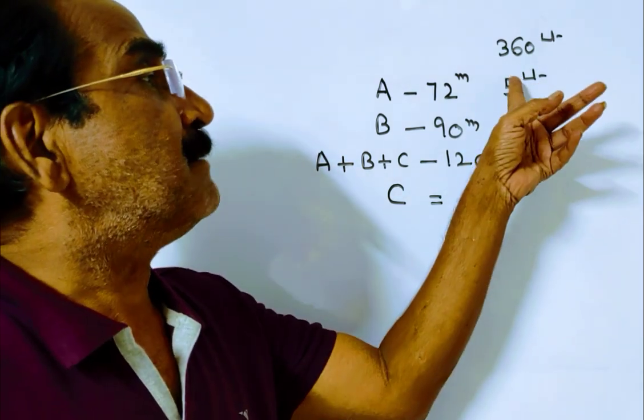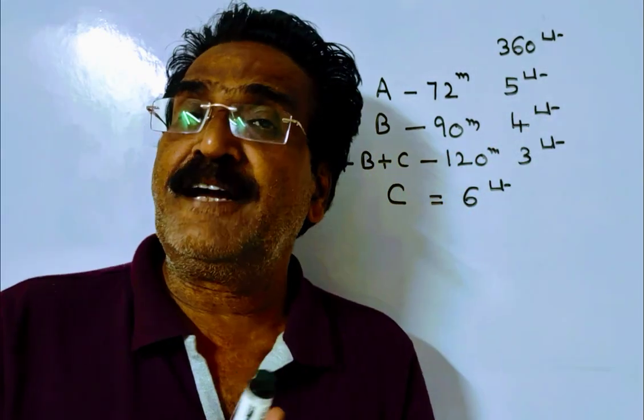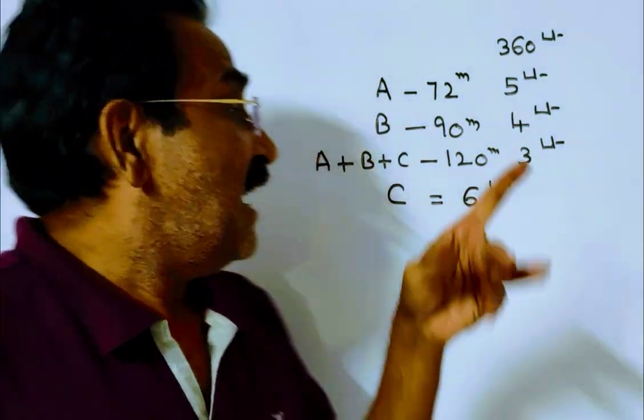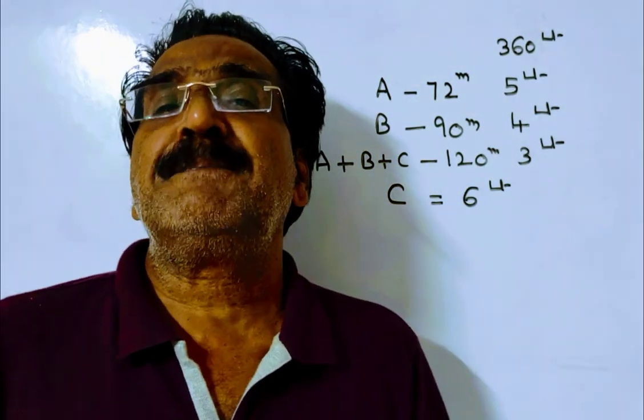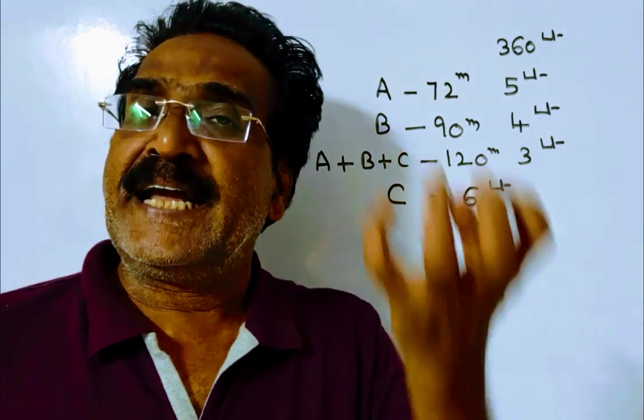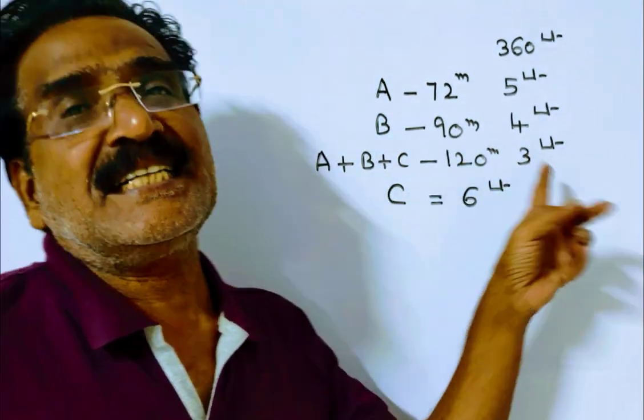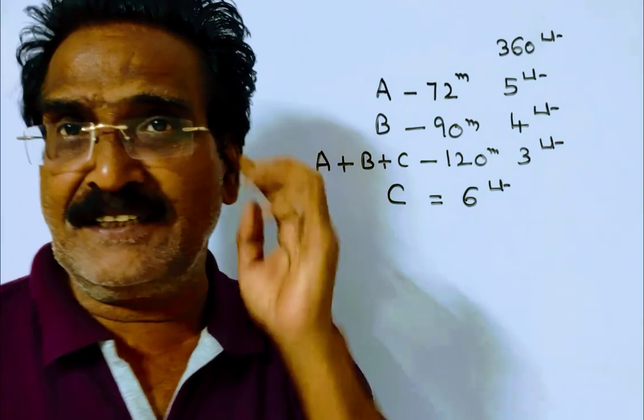A plus B together can fill 9 liters, and C can empty 6 liters. So if A plus B plus C together work, 9 minus 6 equals 3 liters of water is filled into the tank.